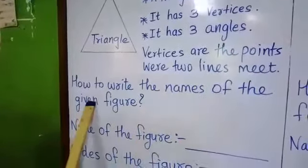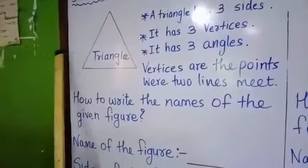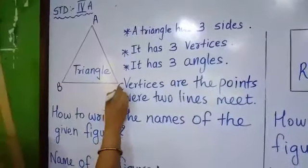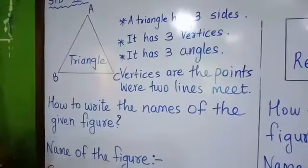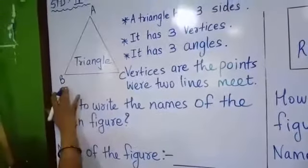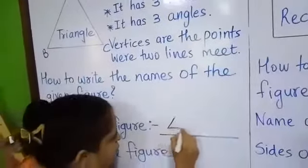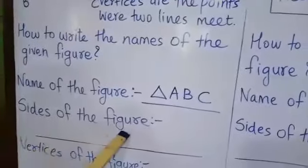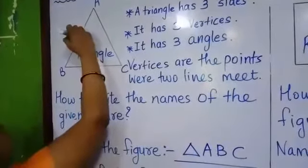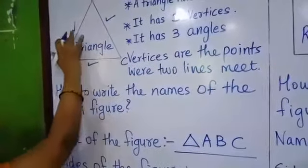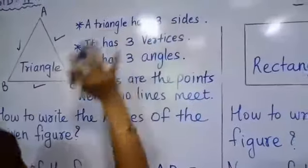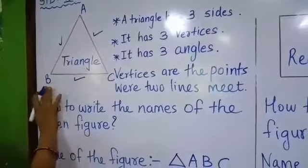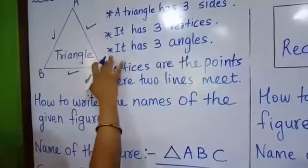Now we will see how to write the name of the given figure. This is a triangle, and I am going to give names to its points: A, B, and C. So the name of the figure is triangle ABC. The sides of the figure are side AB, side BC, and side AC.